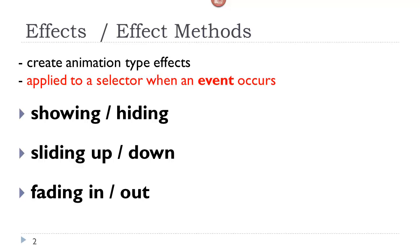In this class we will look at effects and animations. An effect is a method, also called an effect method, that creates an animation-like effect. These methods are applied to a selector when an event occurs, so this is an important concept.